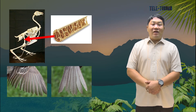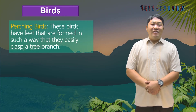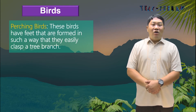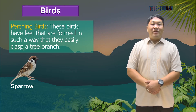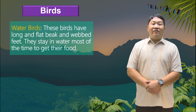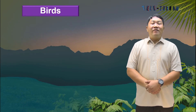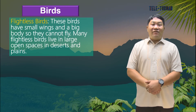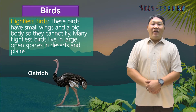Different birds have different body structures that help them adapt to their environment. Perching birds have feet formed in such a way that they can easily grasp a tree branch. Their beaks are long, thin, and strong enough to crack nuts or open tree barks. Woodpeckers, sparrows, larks, and crows are perching birds. Water birds have long, flat, webbed feet and stay in water most of the time to get their food — examples are ducks, geese, and swans. Flightless birds have small wings and a big body so they cannot fly; many live in large open spaces in deserts and plains. An example is the ostrich, which uses its long legs for running and kicking its enemies.